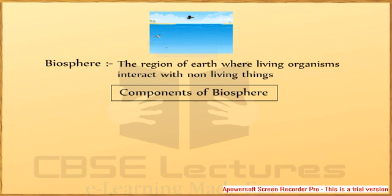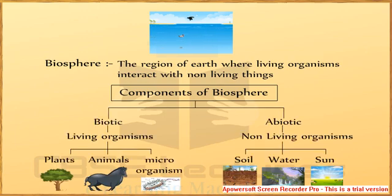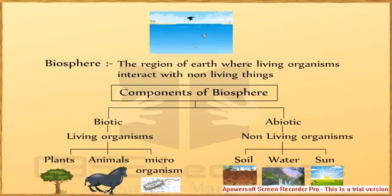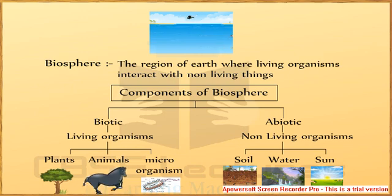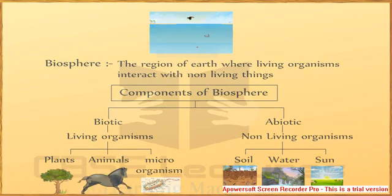Biosphere is the region of earth where living organisms interact with non-living things. There are two components of biosphere: biotic and abiotic. Biotic consists of living organisms like plants, animals, and microorganisms. Abiotic comprises non-living components such as soil, water, and sun.